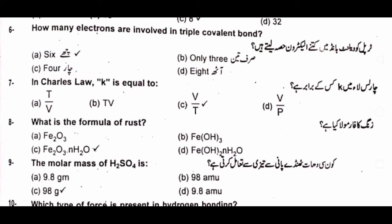A) six, B) only three, C) four, D) eight. The answer is A) six. Question number seven: in Charles' law, k is equal to A) T upon V, B) TV, C) V upon T, D) V upon P.